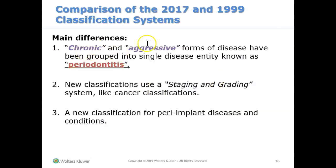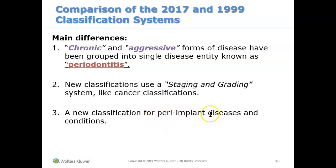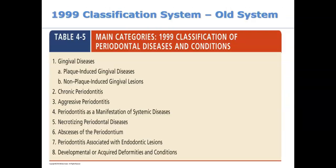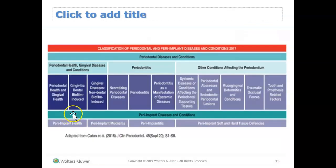So chronic and aggressive periodontitis are now clumped into one called periodontitis, and we stage and grade. Another new thing introduced in the 2017 classification is a peri-implant category. If you look at the old 1999 classification, there's nothing with the word 'implant' in it. Now there is a dedicated peri-implant category.